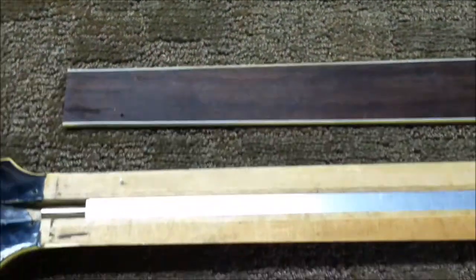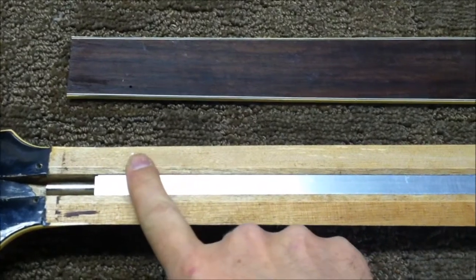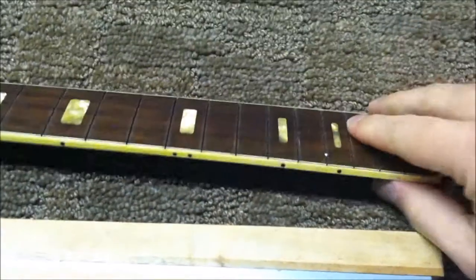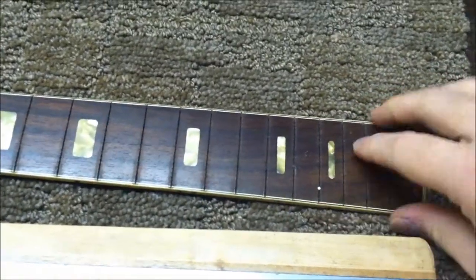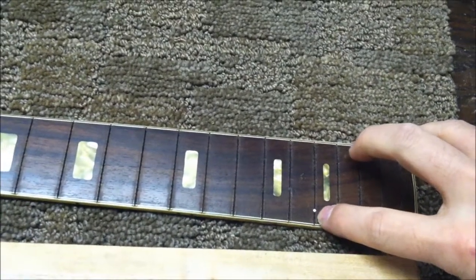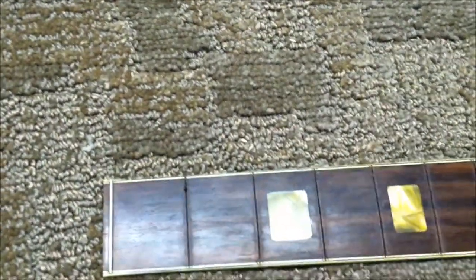Everything's cleaned up on the fingerboard. There are two little locator pins here, using side dot material in white. I drilled a little sixteenth-inch hole in each of these frets as locators so it doesn't swim on me as I'm gluing up.